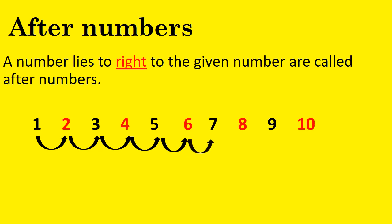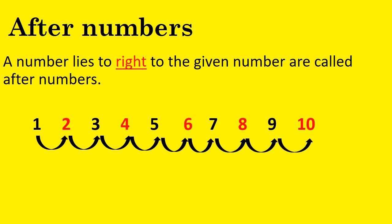7 is right to 6, so 7 comes after 6. 8 is right to 7, so 8 comes after 7. 9 is right to 8, so 9 comes after 8. 10 is right to 9, so 10 comes after 9. Likewise, you can write more numbers: 11, 12, 13, 14 — this is the continuation.